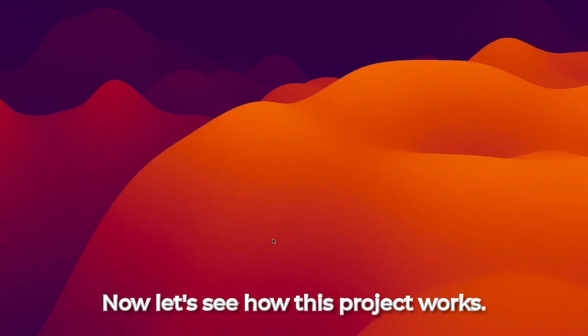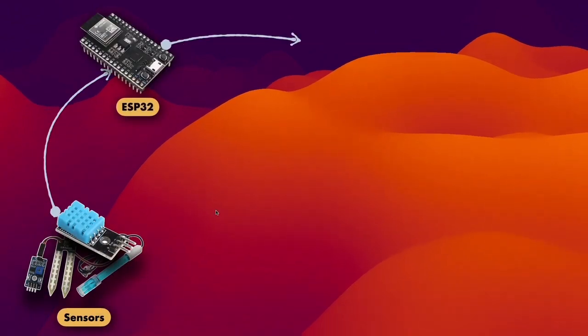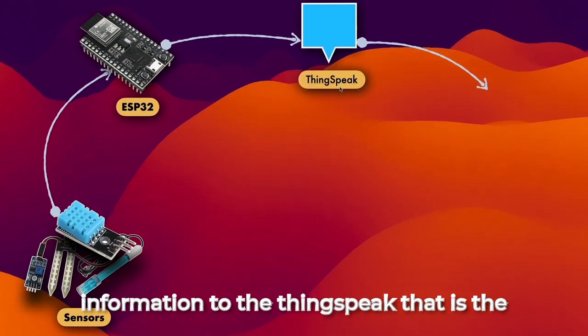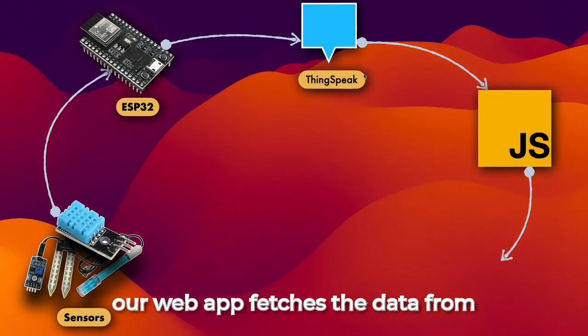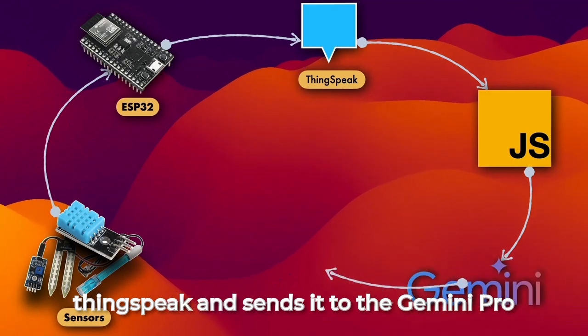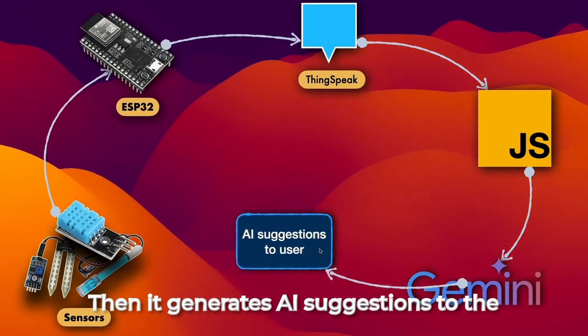Now, let's see how this project works. Firstly, the sensor sends the data to the ESP32 module. Then, it sends the information to ThingSpeak, which is the database. From there, the JavaScript of our web app fetches the data from ThingSpeak and sends it to the Gemini Pro model, which is an LLM model from Google. Then, it generates AI suggestions to the user.